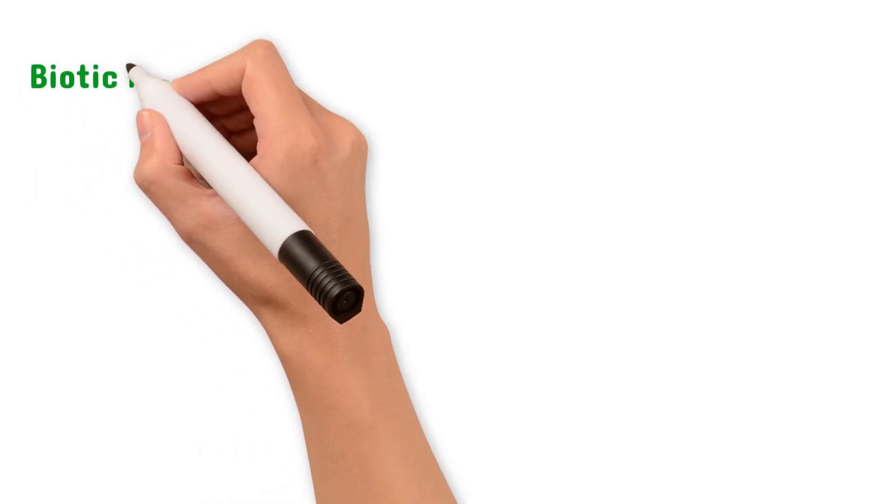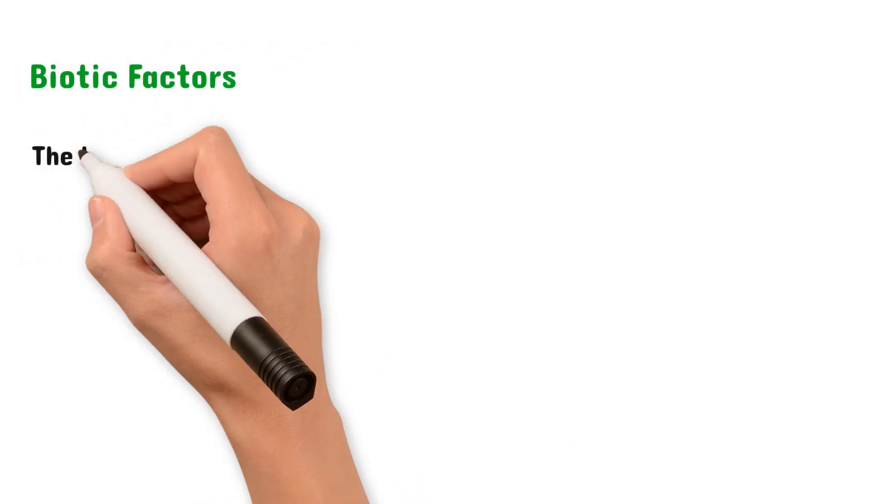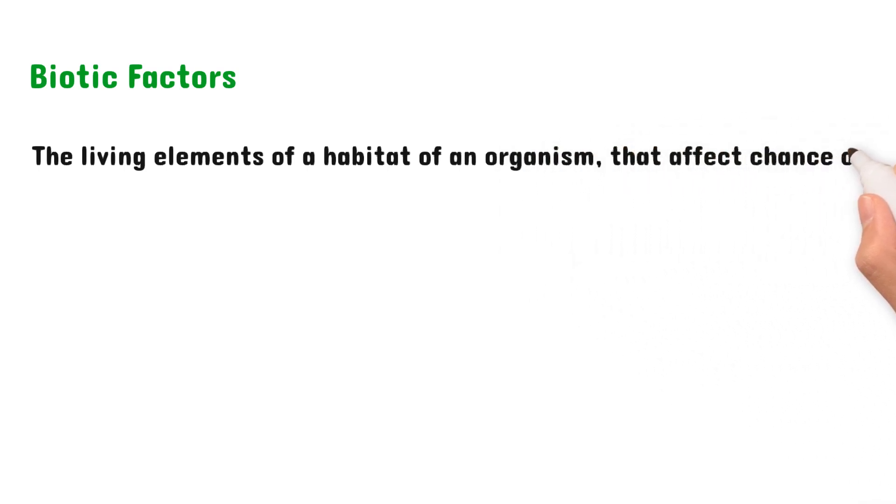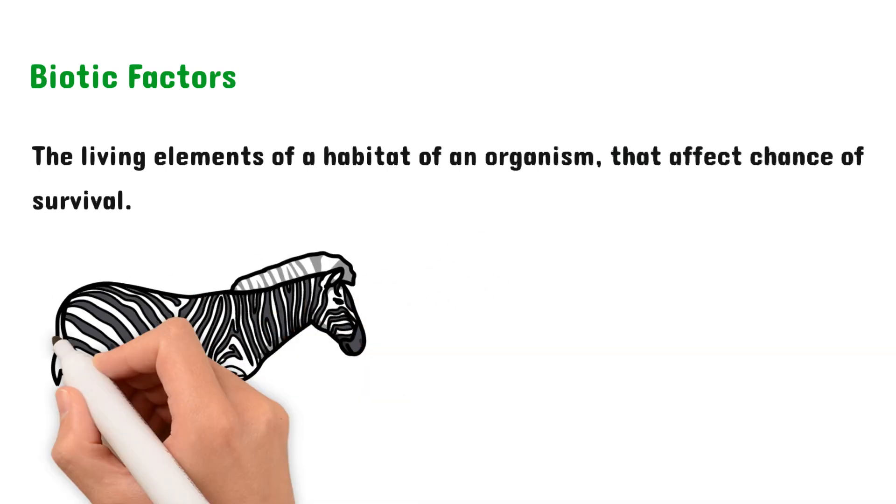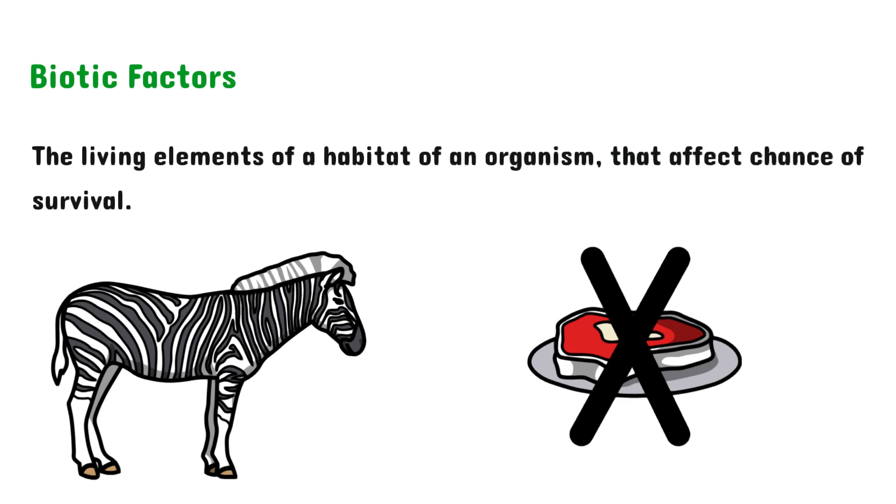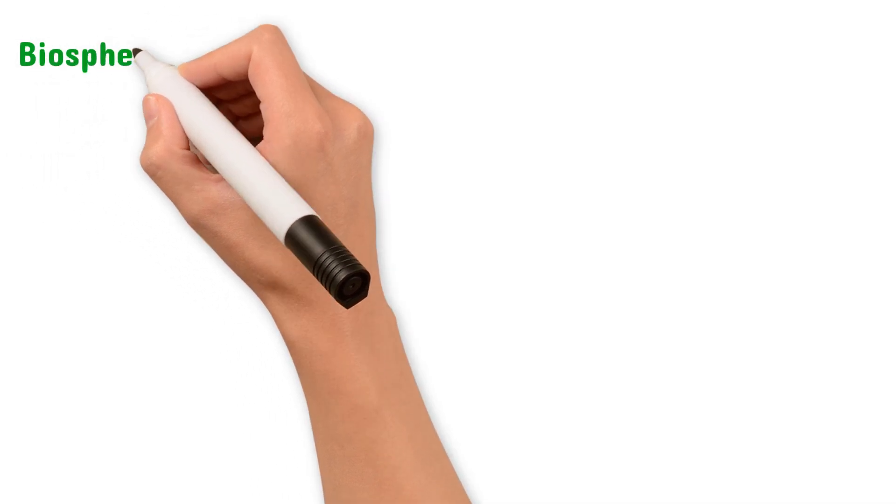Then we have biotic factors, and as you can imagine, these are the living elements of a habitat that affect the chance of survival for an organism. So the best example I can give is of prey. Remember the lion from before? If there are not enough zebras for him to eat, he will go hungry and die, and so the zebra is a biotic factor that affects the chance of survival for the lion.